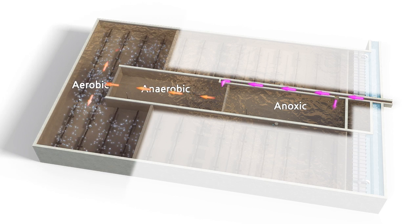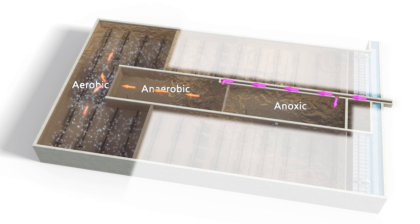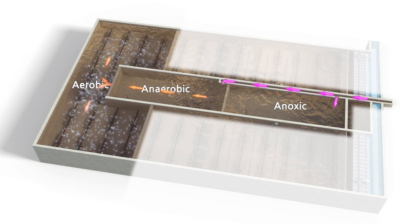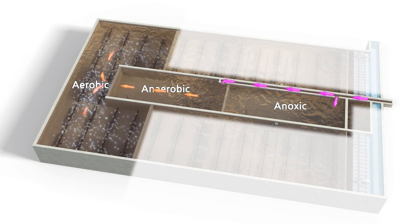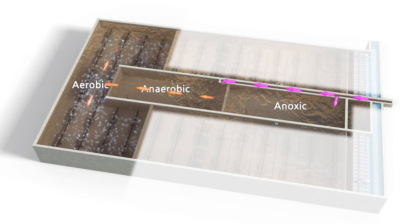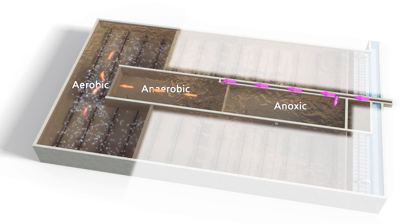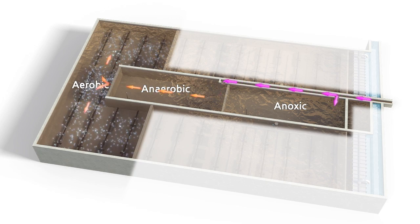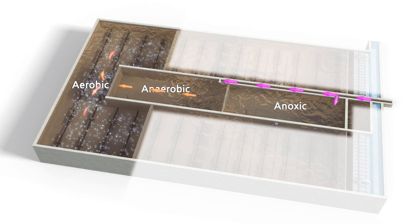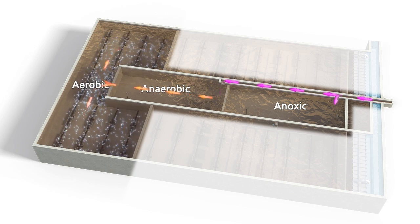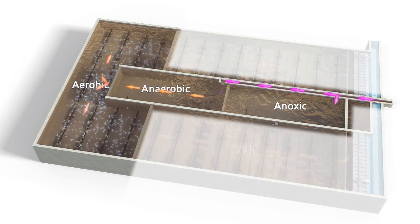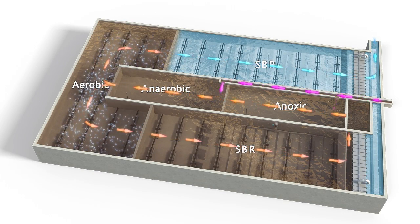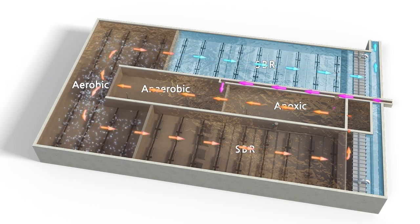In the aerobic cell, the required amount of air is continuously supplied through the uniformly arranged diffusers at the bottom of the cell. The removal of organic matter, nitrification, and also the luxury uptake of released phosphorus from the anaerobic cell take place. The treated water after the aerobic cell then flows to the SBR cells.